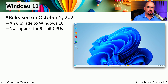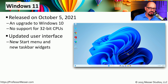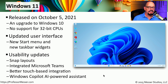The upgrade to Windows 10 is Windows 11, released in October of 2021. One significant change is there is no longer support for 32-bit CPUs. Windows 11 comes with a new user interface — the desktop looks slightly different, with a new start menu and new taskbar widgets. Windows 11 integrates Microsoft Teams, has new snap layouts, and improved touch integration for tablets. Microsoft has also built in artificial intelligence using Windows Copilot inside of Windows 11.